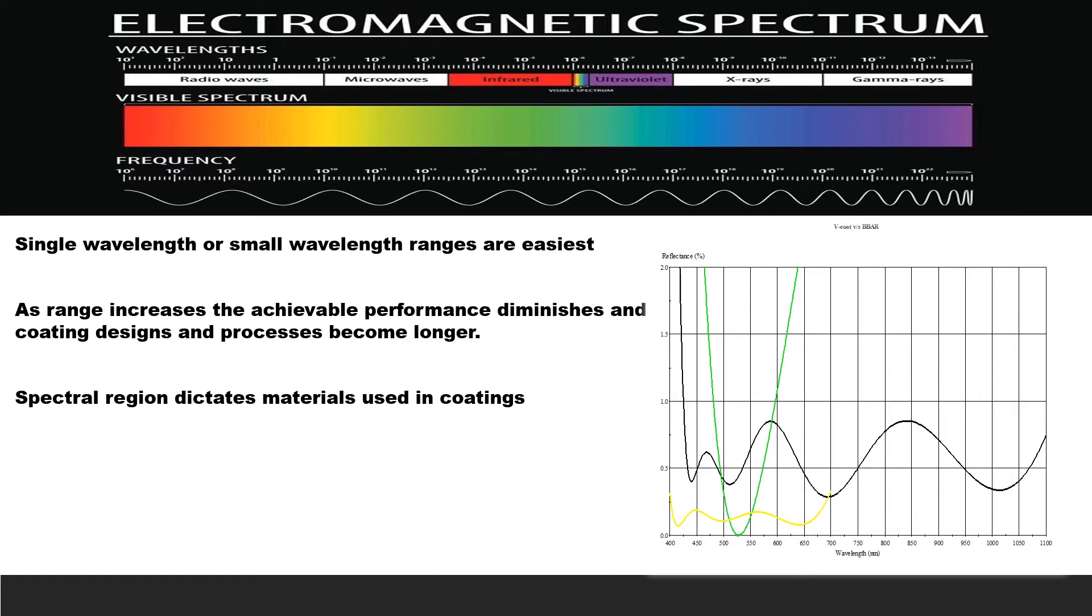The wavelength or wavelength range or bandwidth. Pertaining to this, I would just point out that coating requirements for single wavelengths or small wavelength ranges are easier than broad ranges. As the range increases, the achievable performance diminishes and coating designs and processes become longer. The small graph there shows as you move from a V-coat to a visible broadband AR to a visible to a near-infrared AR, you can see the reflectance creeping up.